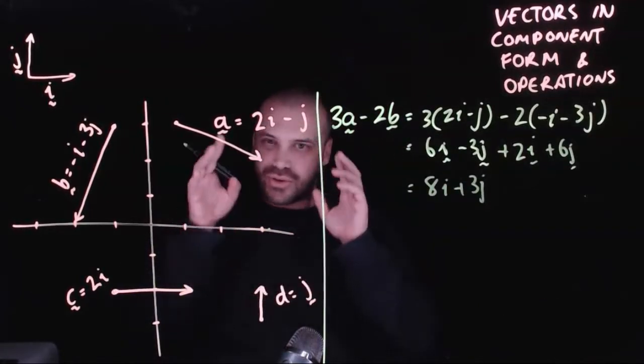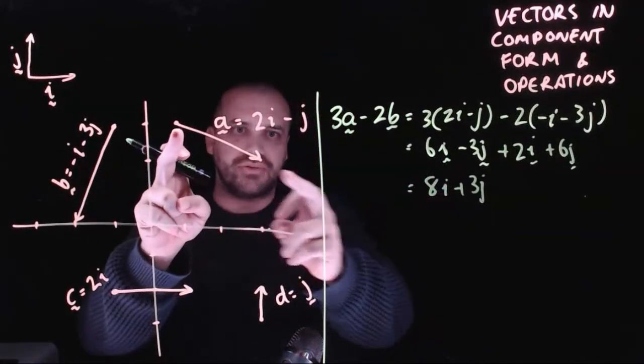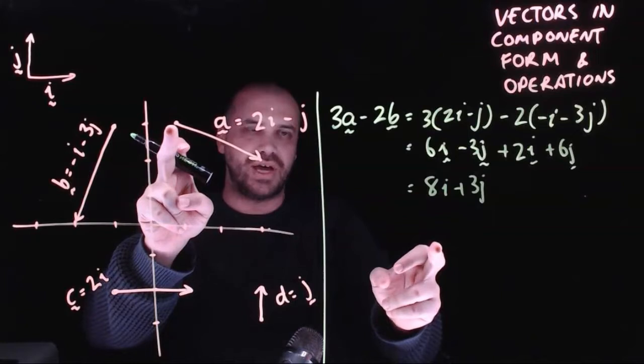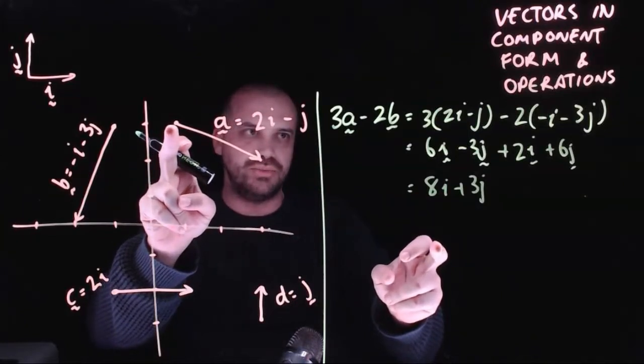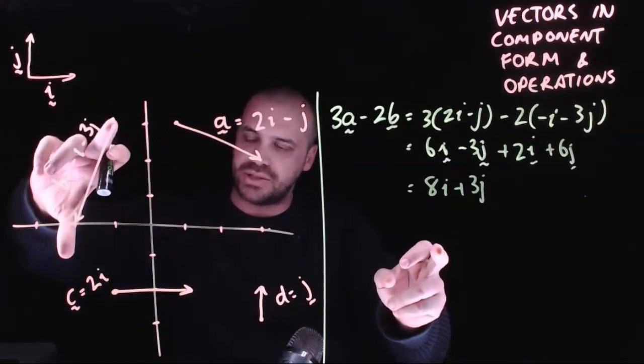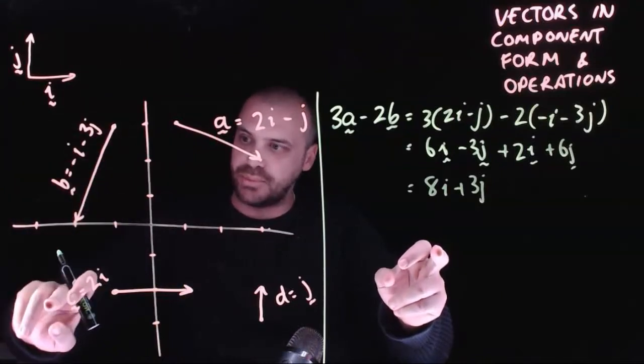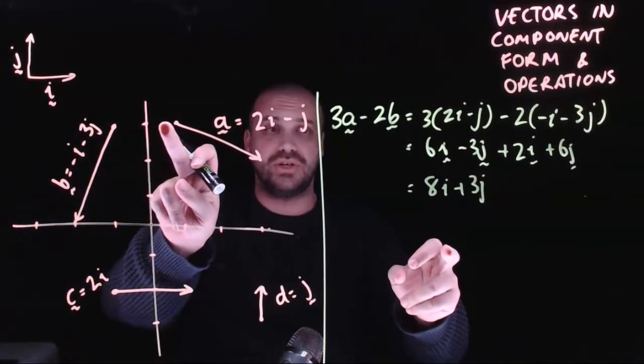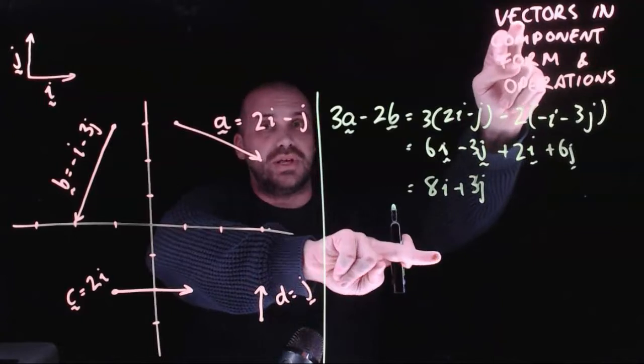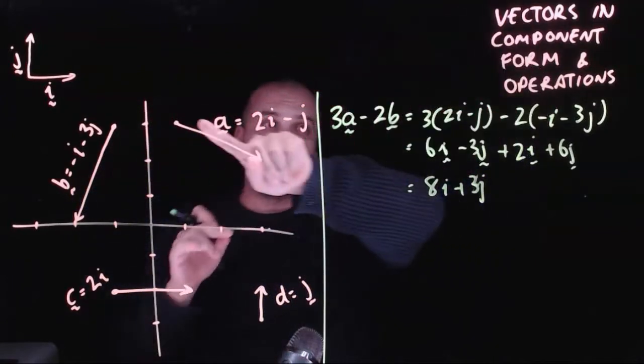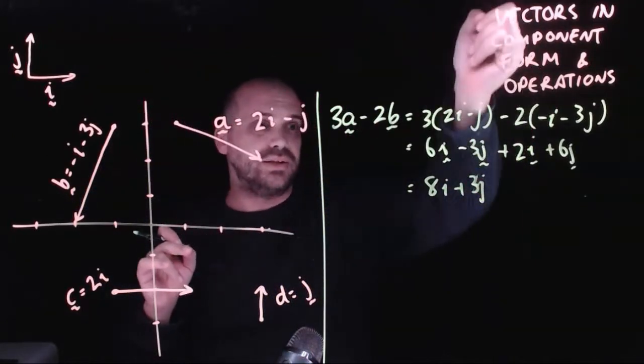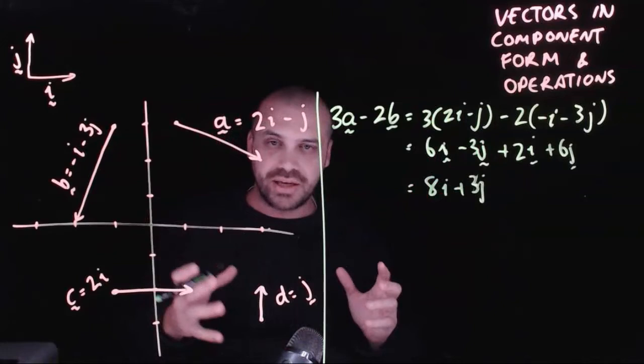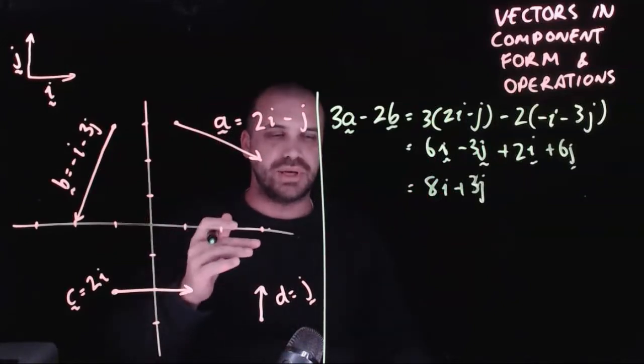Now again, you can sort of visualize this. 3a, three lots of a, minus 2b. So b is this. So 2b would be double that. But negative 2b would be the reverse of that. So you go from a up to there and you get this vector here. A lot in the i component and a little bit up. 8i plus 3j. That seems correct to me.